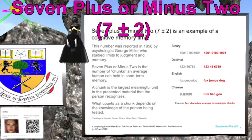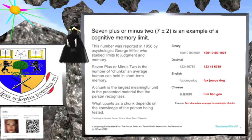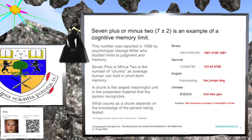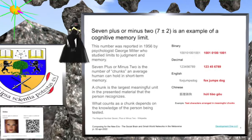Seven plus or minus two is an example of a cognitive memory limit. If we are asked to remember a list of ten items or more, most of us cannot do it unless the information is presented in chunks. A chunk is the largest meaningful unit in a list that a person can easily recognize. For example, if I said remember this: 1 0 0 1 0 1 0 0 1 0 0 1, most people could not do it.